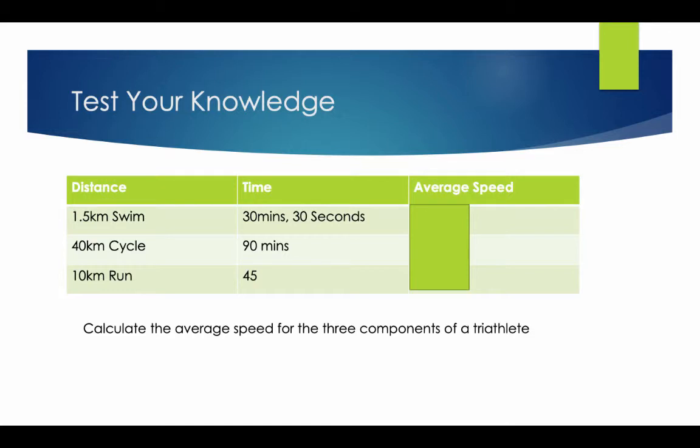Test your knowledge: calculate the average speed for the three components of a triathlete. For example, the distance of the swim is 1.5, and the time is 30 minutes 30 seconds. Use the triangle on the previous slide to work out the answers. Pause the video now and give this a go.